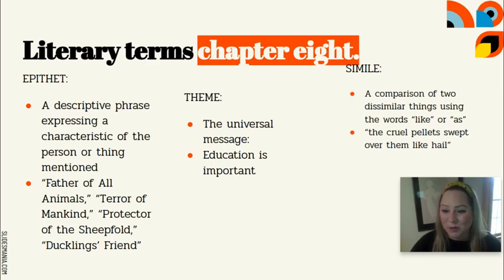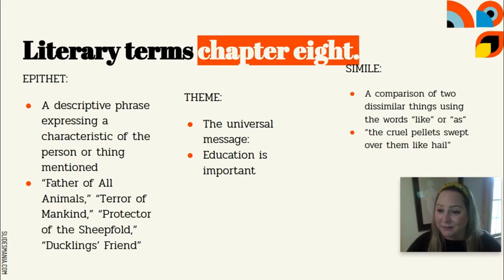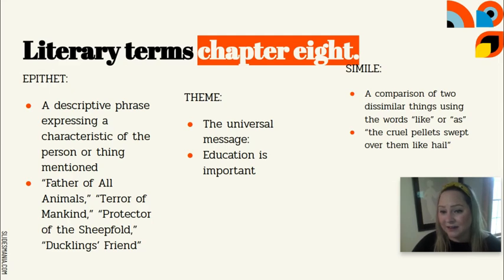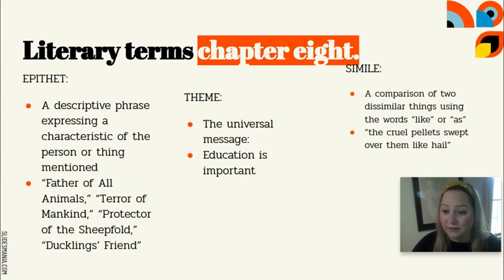Lastly, we have simile in this chapter. A simile is a comparison of two dissimilar things using the words like or as. During the battle scene in Chapter 8, we have the sentence: the cruel pellets swept over them like hail — comparing the bullets of the humans' guns to hail in a hailstorm.